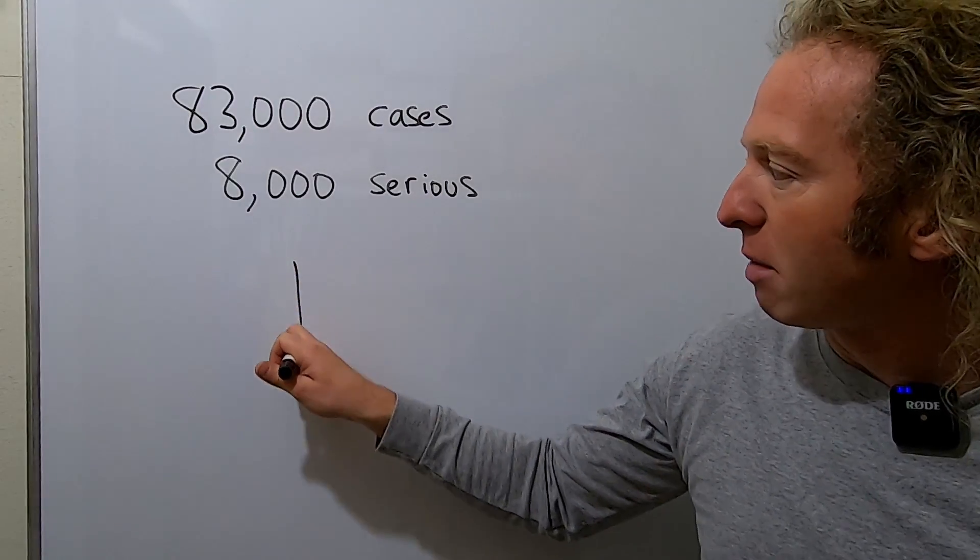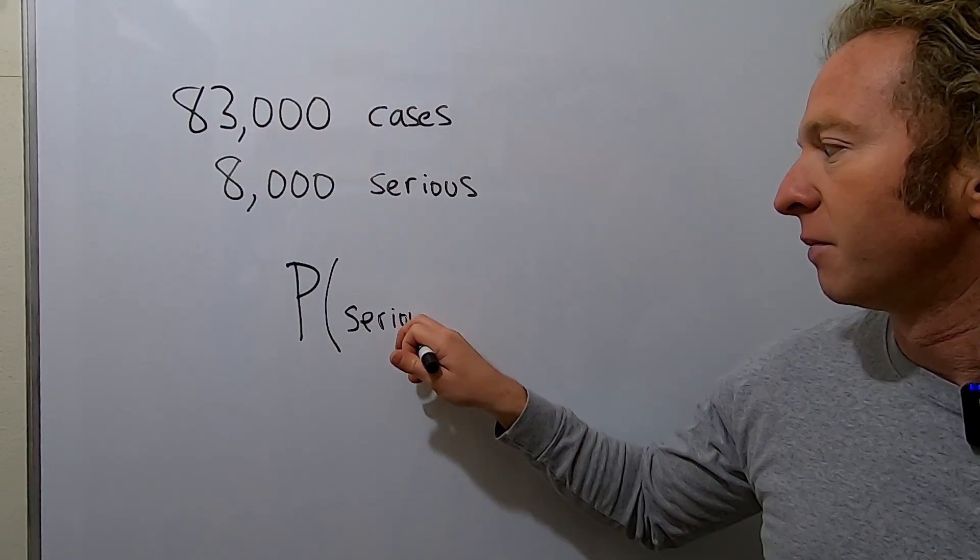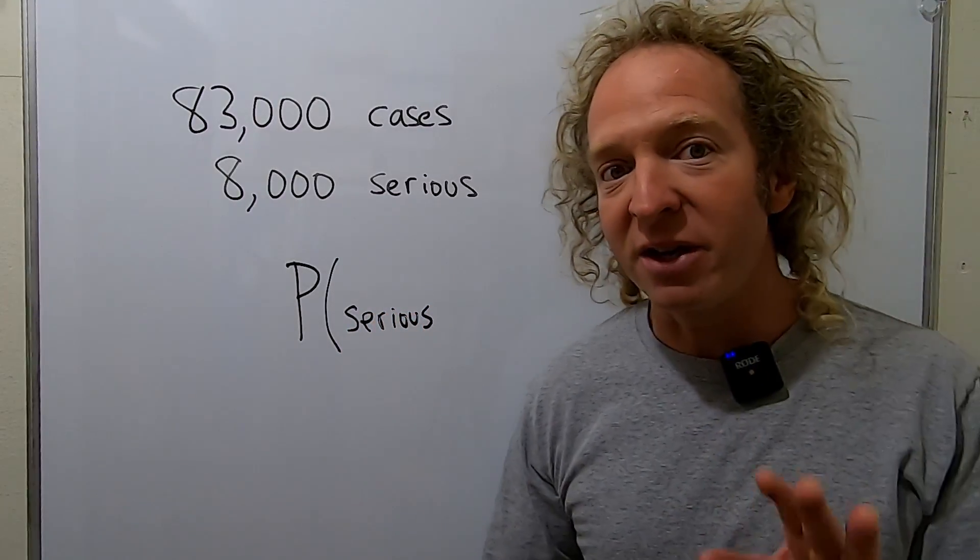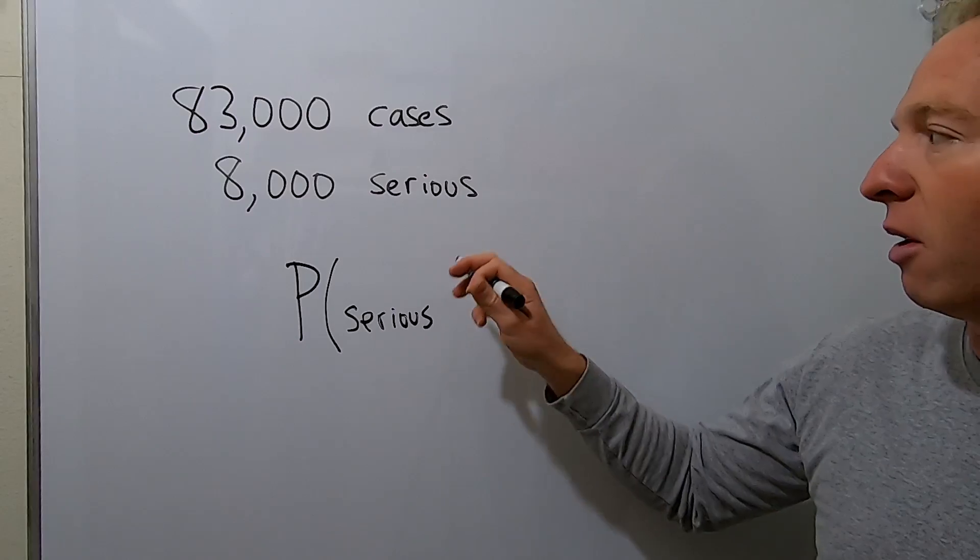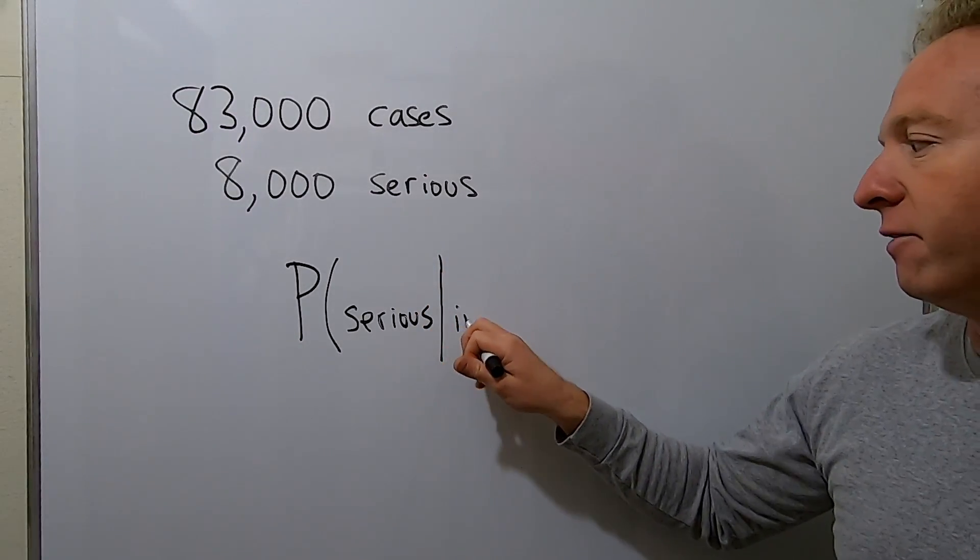Let me write down the notation. So we want the probability that we have a serious case of corona, given that you're infected. So this assumes that you already have the infection. I'm going to put a little line here—this means 'given'—and then infected.